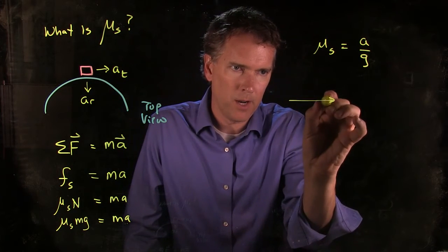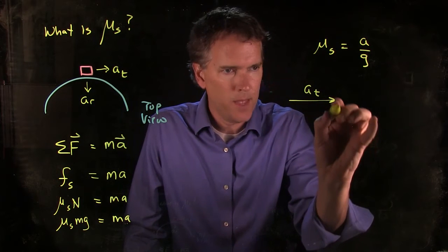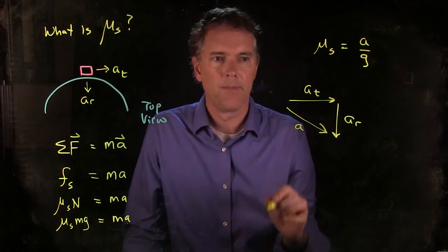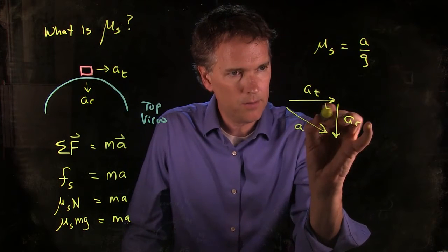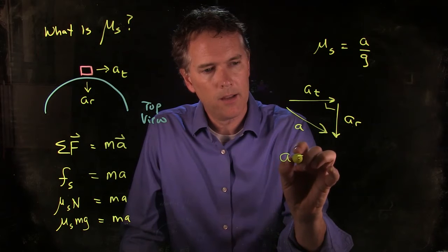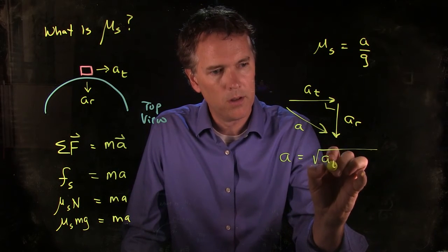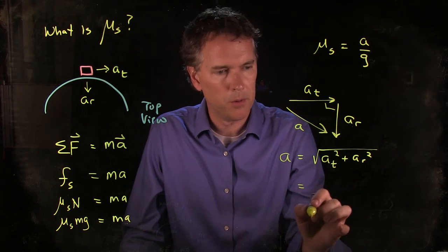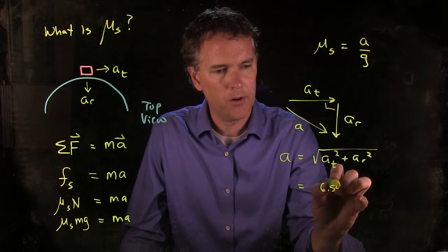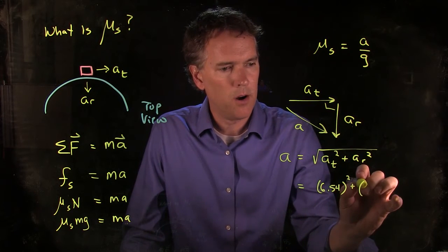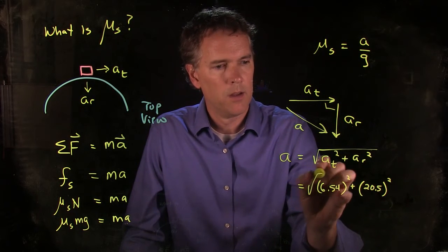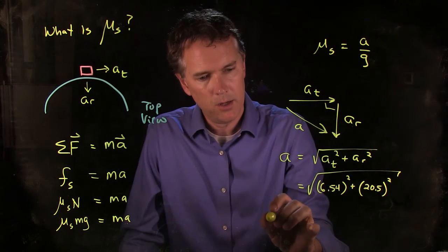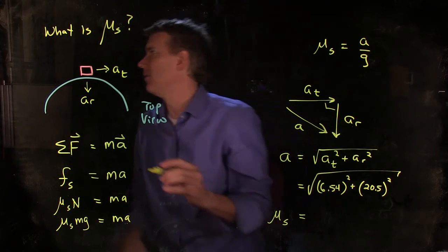If I have a vector to the right, at, and I have a vector down, ar, where's a? It's right there. That's what a is, and this is the right angle. And so we know that a according to Pythagoras has to be the square root of at squared plus ar squared. And now if we punch in all those numbers, let's see what we get. at we had 6.54, ar we have 20.5. I'm going to square those and add them up, and when you do that and then you divide by g, you should get a μs that is equal to, what did I get? I don't remember, let's just try it right here.